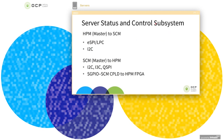Moving on to the server status and control subsystem: there are buses where the HPM is the master, including the ESPY and LPC bus used in some architectures, or I2C bus used in others. There are also buses where the SCM or BMC is the master, like I2C, I3C used typically for DIMMs on the HPM, and QSPY typically between the BMC and the HPM FPGA. We also support the serial GPIO interface between the SCM-CPLD and the HPM FPGA.